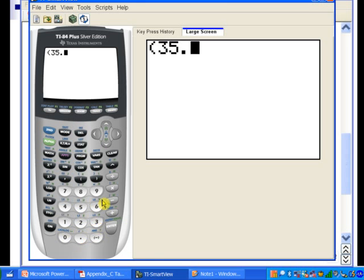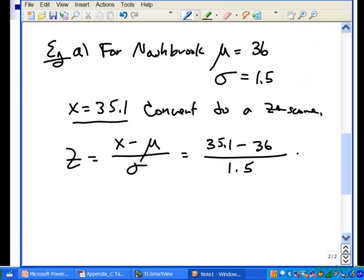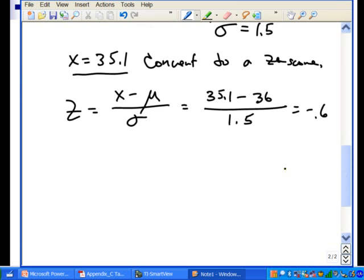We'll put in parentheses 35.1 minus 36 - that's our numerator - divided by 1.5. We get negative 0.6. So in that year, the snowfall for Nashbrook is 0.6 standard deviations below the mean. They had a little bit less snow than they usually did.